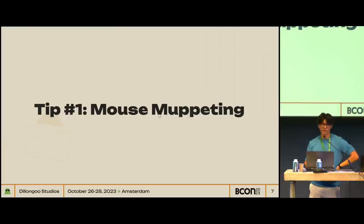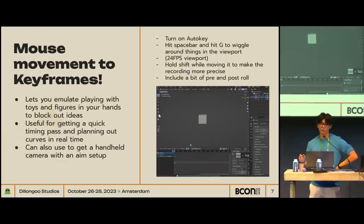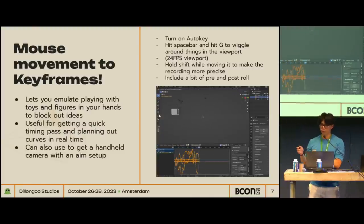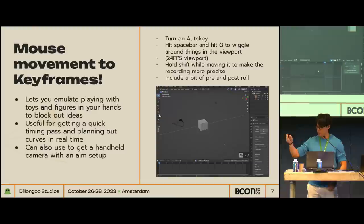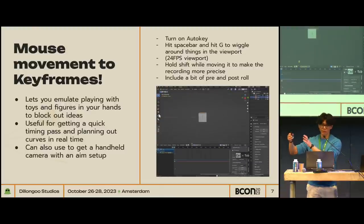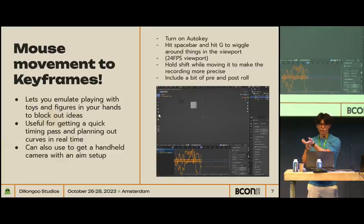My first tip is something called mouse muppeting. Blender has a cool feature where if you turn on auto key and hit the spacebar, you can live-record your mouse movements to location data. This is very handy if you grew up playing with toys and acting out scenes with your hands. You can get a quick approximation of what you want in 3D space — the timing and the arcs. This is also helpful for camera handheld if you're doing an aim constraint.